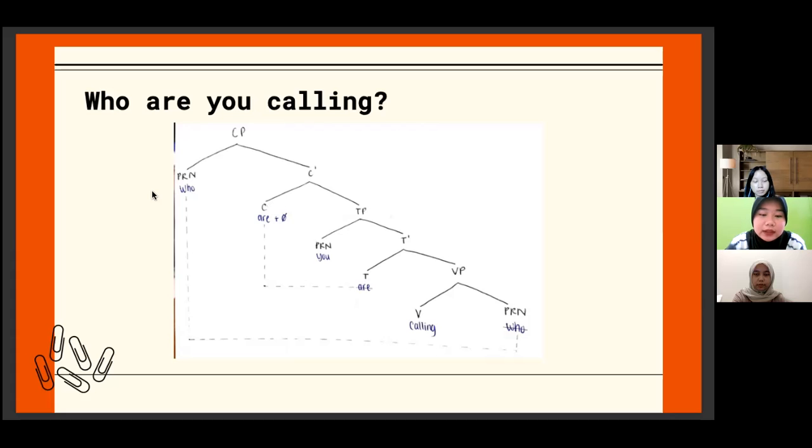Second, the auxiliary 'are' moves from the head T position of TP into the head C position of CP. Movement of the tense 'are' to C serves to type the C-bar as interrogative.